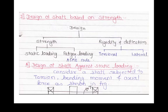We'll discuss the design of shaft based on strength. Shaft design can be classified into two categories: first, strength, and second, rigidity and deflection. The strength category is further sub-classified into static loading strength and fatigue loading strength. For fatigue loading, we use the ASME code.